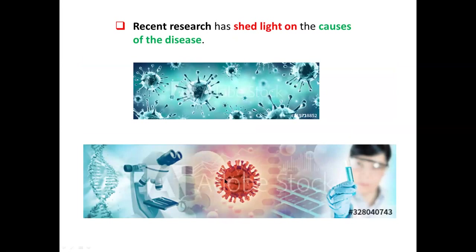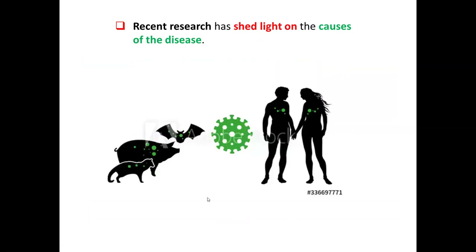Third example: 'Recent research has shed light on the cause of the disease.' Let us assume the disease stemmed from coronavirus, and researchers worked day and night. In the end, they revealed the cause of the disease — it was a propagation starting from a bat, possibly through a pig, and then ultimately to human beings. We could also modify this sentence as: 'Recent research has shed light on the treatment of the disease.'